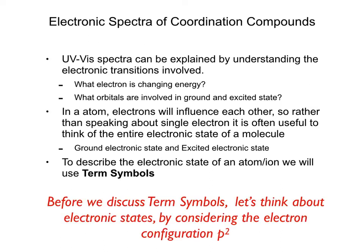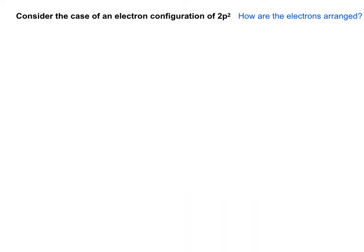To illustrate this, let's go back to a simple example we've already discussed: the electron configuration in a P2 system — for instance, carbon with two P electrons. We can ask ourselves how the electrons are arranged if we have an electron configuration of 2P2.